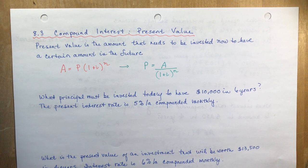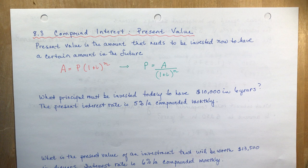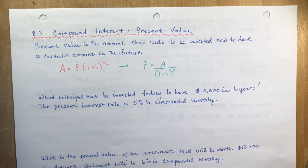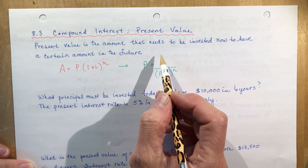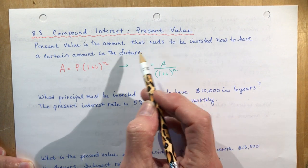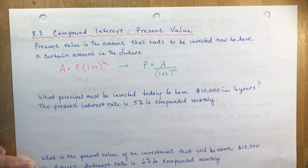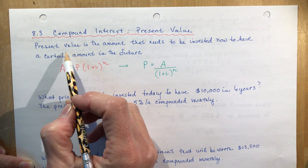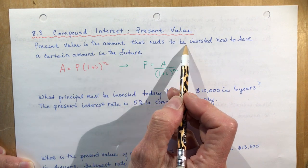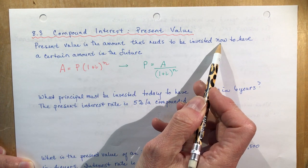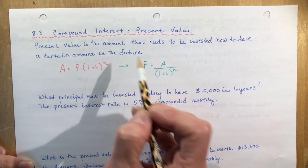8.3 is compound interest present value, a continuation from what we were doing in 8.2. Your teacher might have done both lessons together because they're pretty much the same thing. This time you're looking for a present value — you need to know the grammar: present value is the amount that needs to be invested now to have a certain amount in the future.